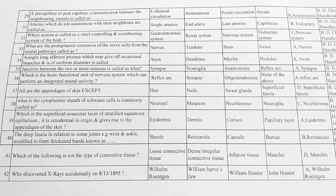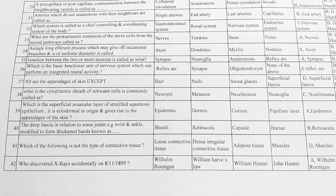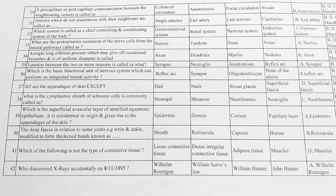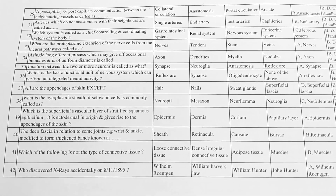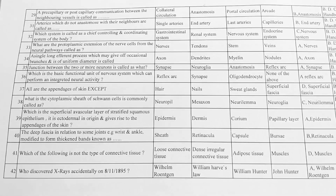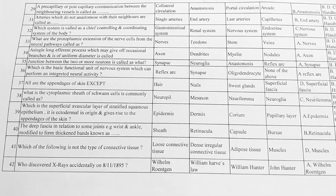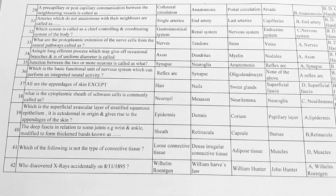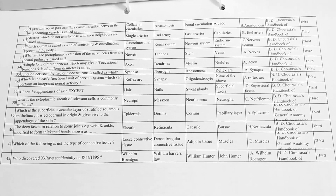Next, who discovered x-rays accidentally on 8 November 1895? Options: A. Wilhelm Roentgen, B. William Harvey, C. William Hunter, D. John Hunter. Option A is correct, Wilhelm Roentgen. Thank you for watching the video.